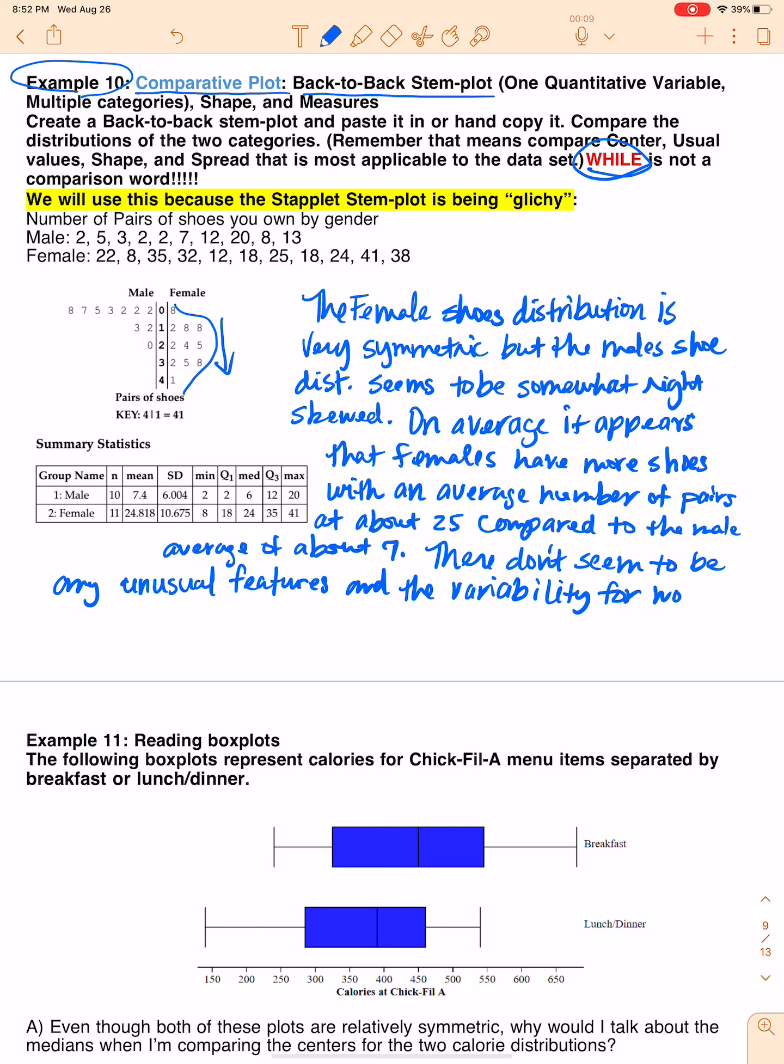And the variability for women is greater than that of the males with a standard deviation of 10.7 compared to 6.0, or just six.